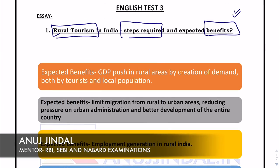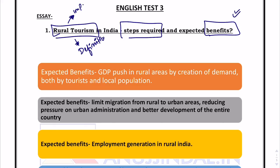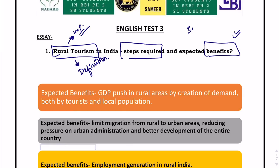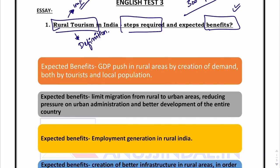Let's start with the first topic: Rural Tourism in India — Steps Required and Expected Benefits. In the introduction, as I've mentioned in past videos, we talk about two things: the definition and the importance of the topic. You define what rural tourism is and then explain why it holds so much importance in India right now. Then we directly jump onto benefits and steps required, since we have to write the essay in only three to four hundred words.